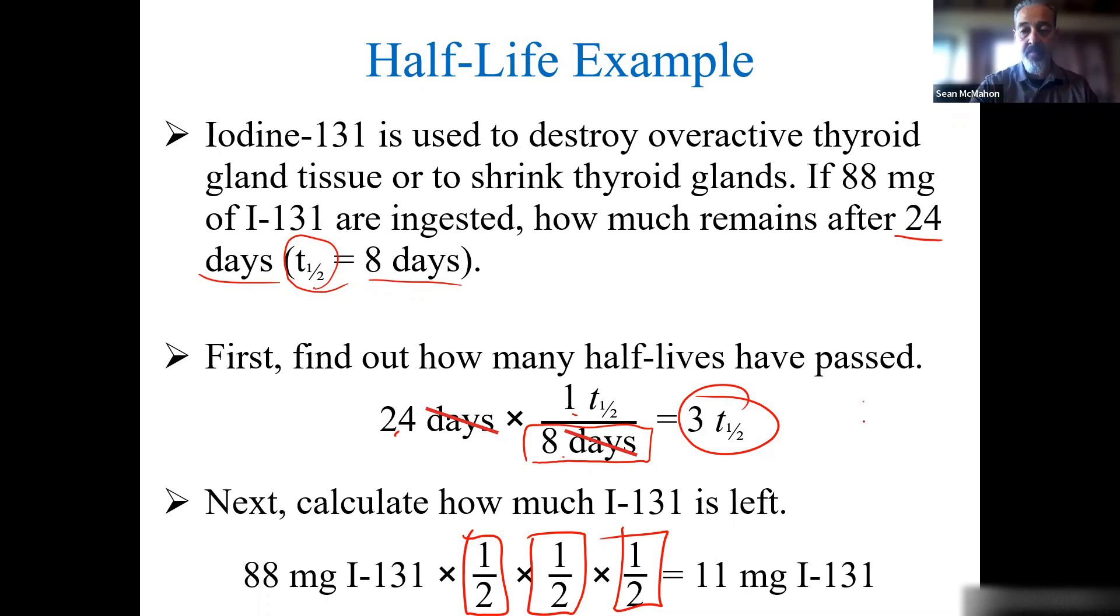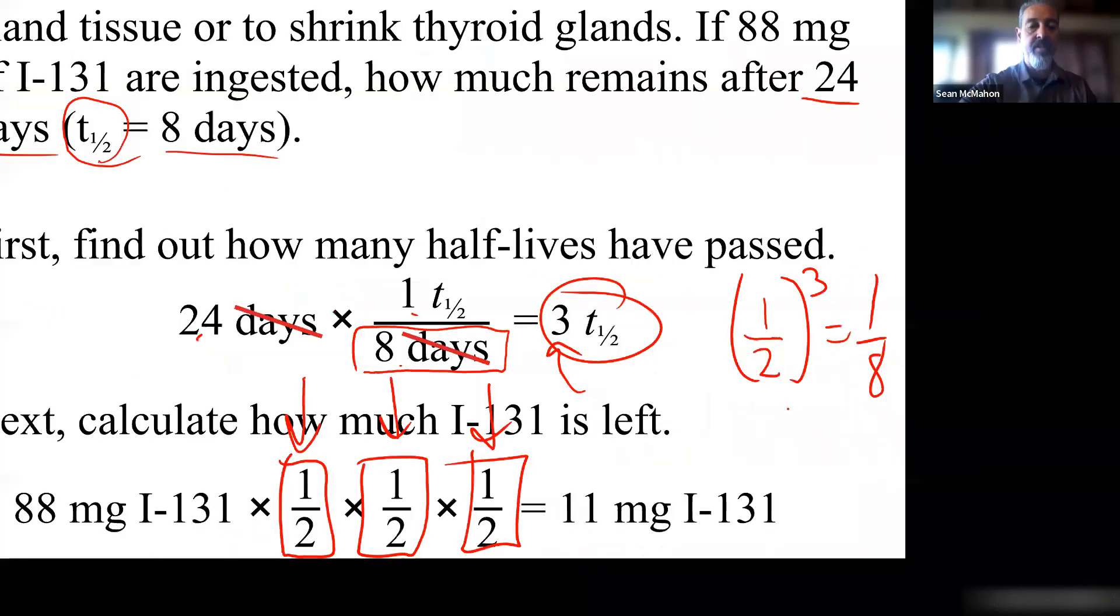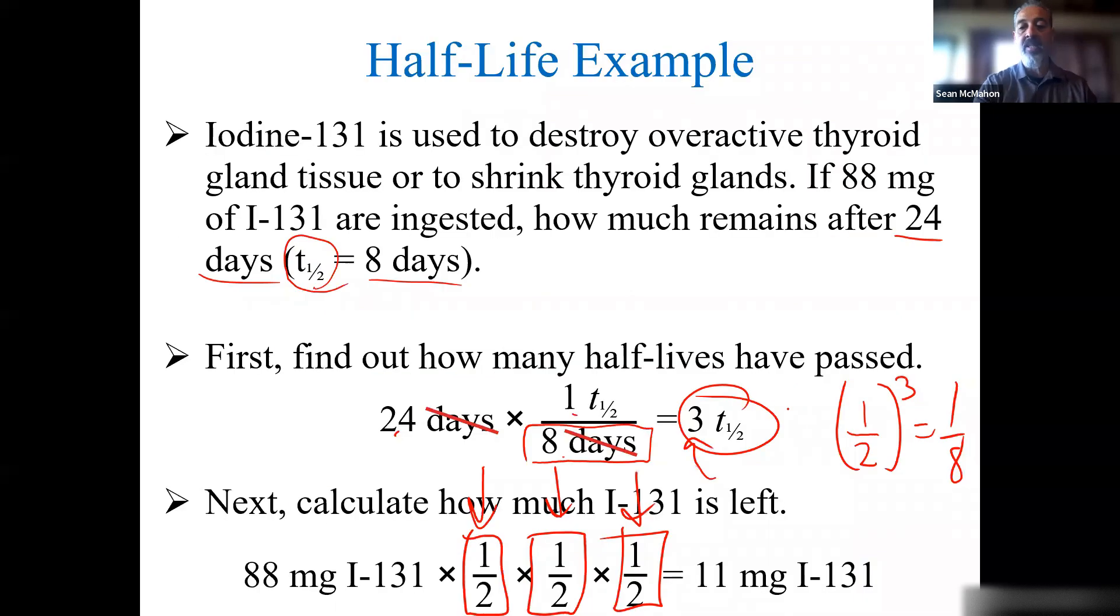How could I calculate it? You could say 88 times one half-life, two half-lives, three half-lives. You would multiply 88 by one-eighth. How did I get one-eighth? One-half cubed. Why am I cubing it? Three half-lives. I times it by half three times. One-half cubed is one-eighth. One-eighth times 88 leaves me with 11 milligrams of the original iodine-131 sample.